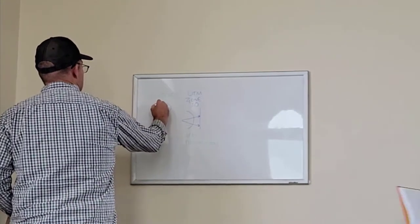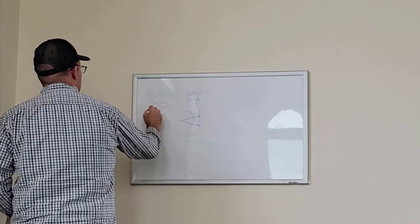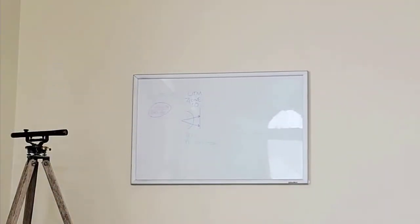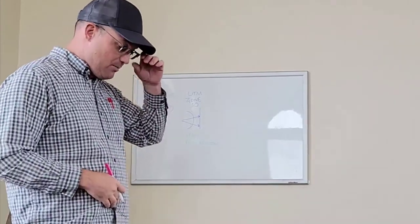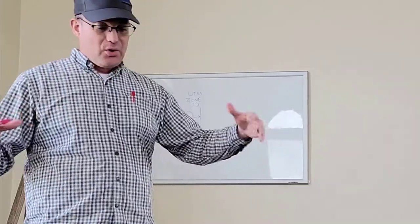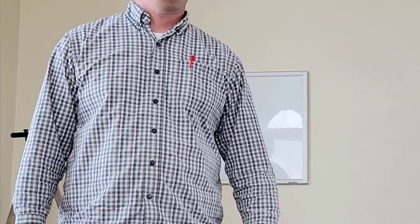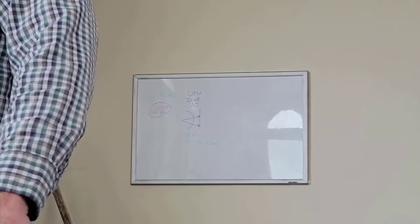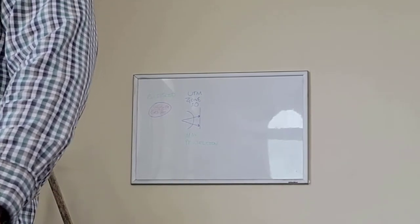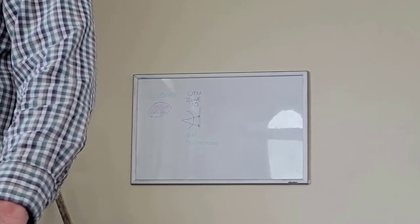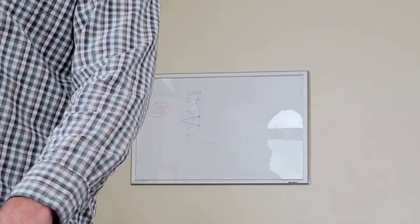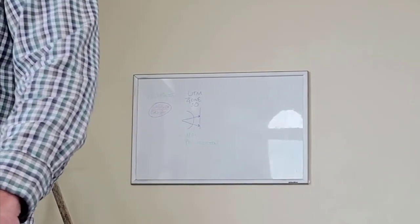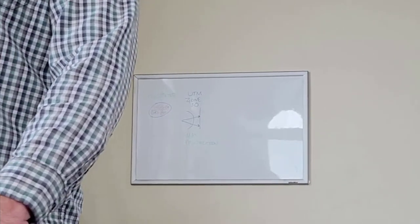Typically UTM uses the WGS-84 ellipsoid, which is essentially the GRS-80 ellipsoid — and that's the same ellipsoid used for state plane coordinates. I want you to understand: depending on the ellipsoid you use, your latitude-longitude values for the same point are going to change. The latitude-longitude in one ellipsoid is going to be slightly different from another. WGS-84 is GRS-80 best fit to the Earth; NAD-83 is GRS-80 best fit to the North American plate — and they're about three feet apart.